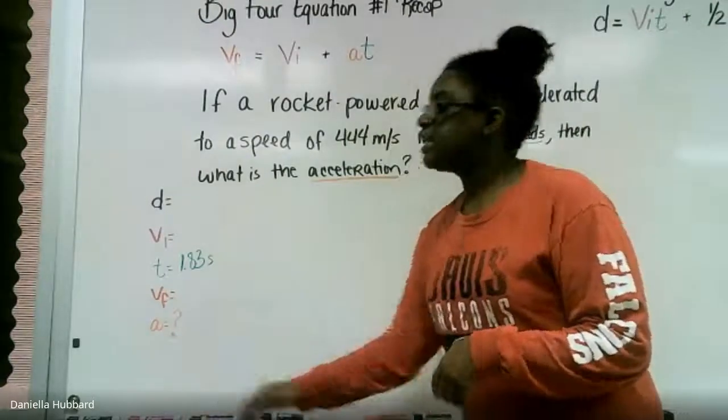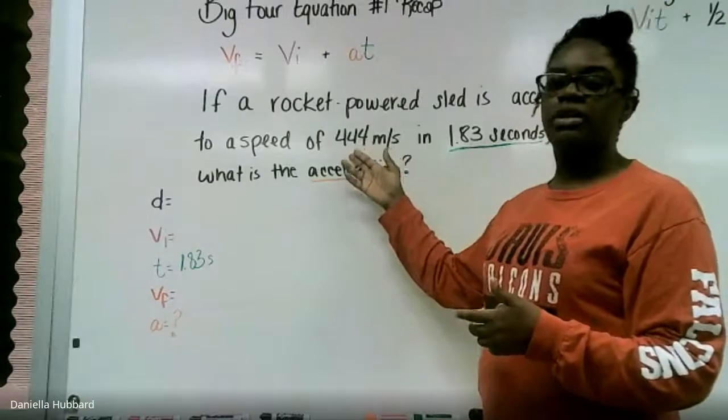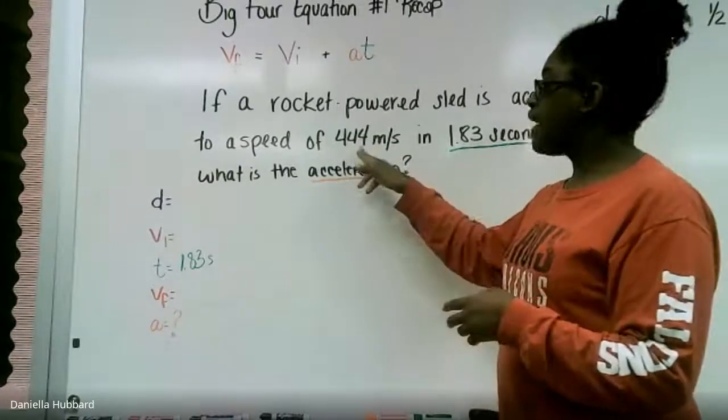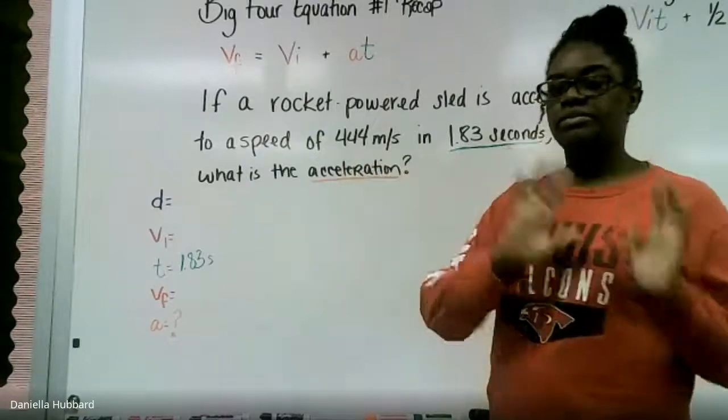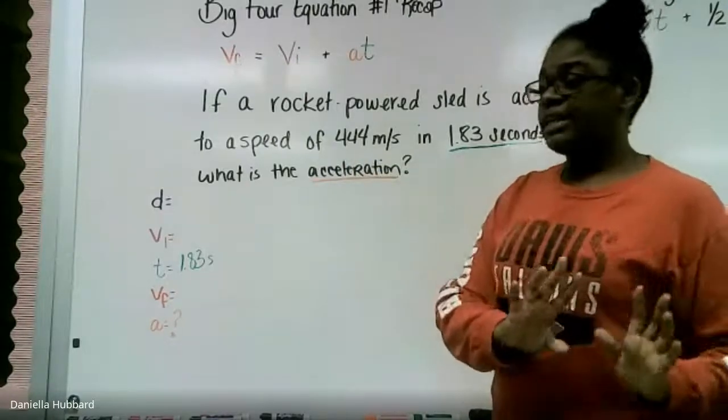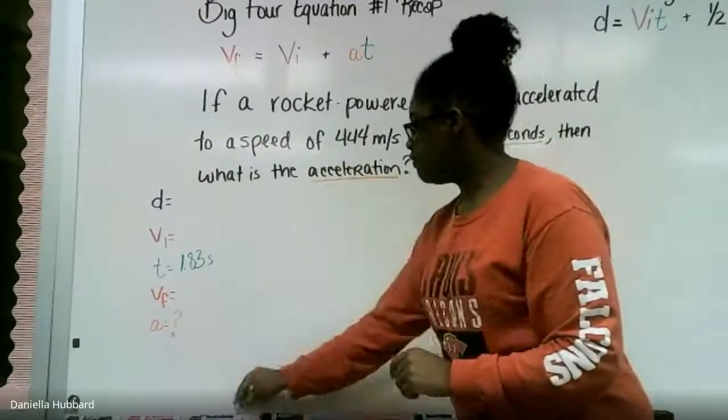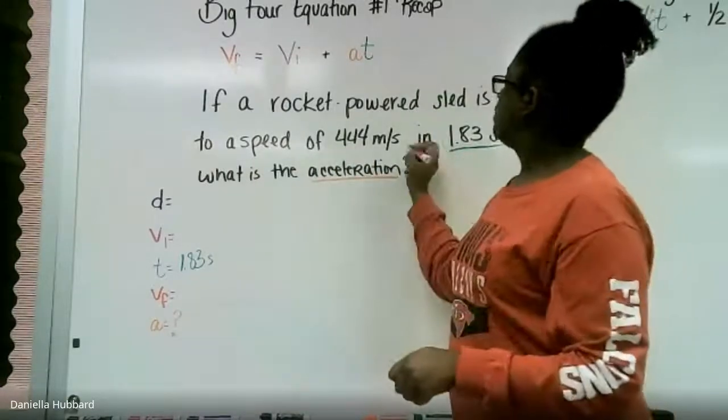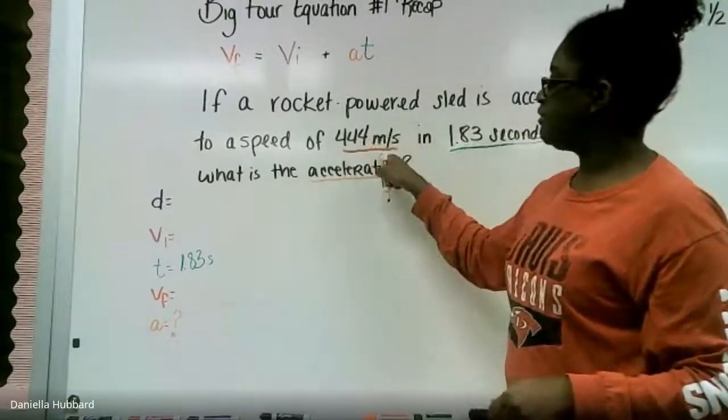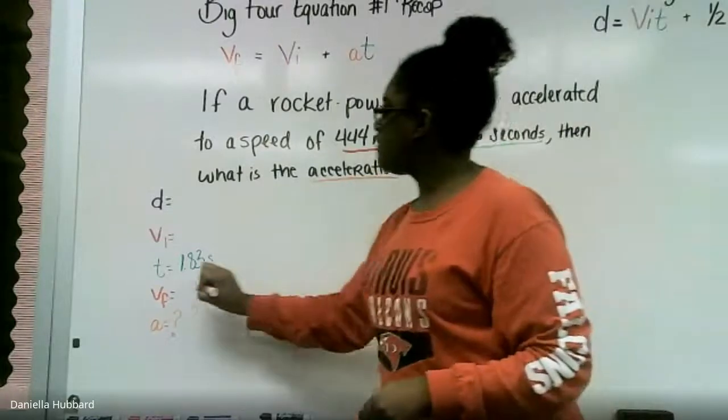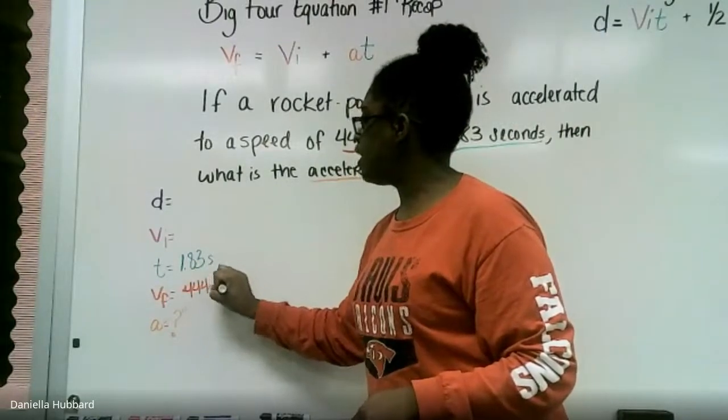We accelerated to a speed of 444, so that means our final speed is 444. We started something from nothing and then we accelerated, we increased our speed to 444. So this meters per second, which is the unit of speed, this is our final speed, this is what we sped up to.